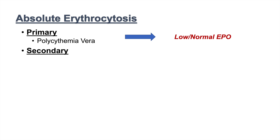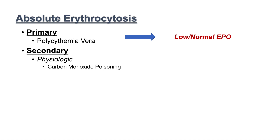The secondary causes of absolute erythrocytosis are mostly related to hypoxemia, which triggers a compensatory increase in red blood cell production. A physiologic subcategory includes carbon monoxide poisoning, which decreases oxygen-carrying capacity, prompting the body to make more red blood cells. This is also seen in heavy smokers.